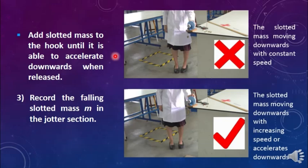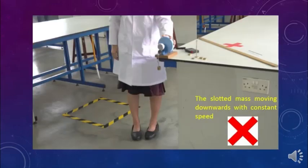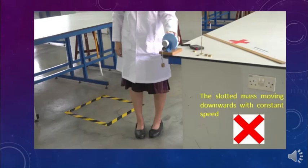Therefore, we have to keep on adding the slotted mass to the hook until it can accelerate downwards. Then only we start recording the falling slotted mass m in the data table. Do not record the mass of the falling slotted mass if it is not moving down or moving down with a constant speed when it is released from a certain height.